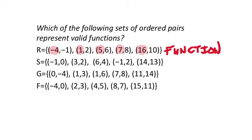In the next set, they put in negative 1, then 3, then 6 — no repeat yet. But then there's another negative 1. The first time they put in negative 1, out spits a 0. The second time they put in negative 1, it spits out a 2. I don't need to check the last value — this one is malfunctioning, so it is not a function.